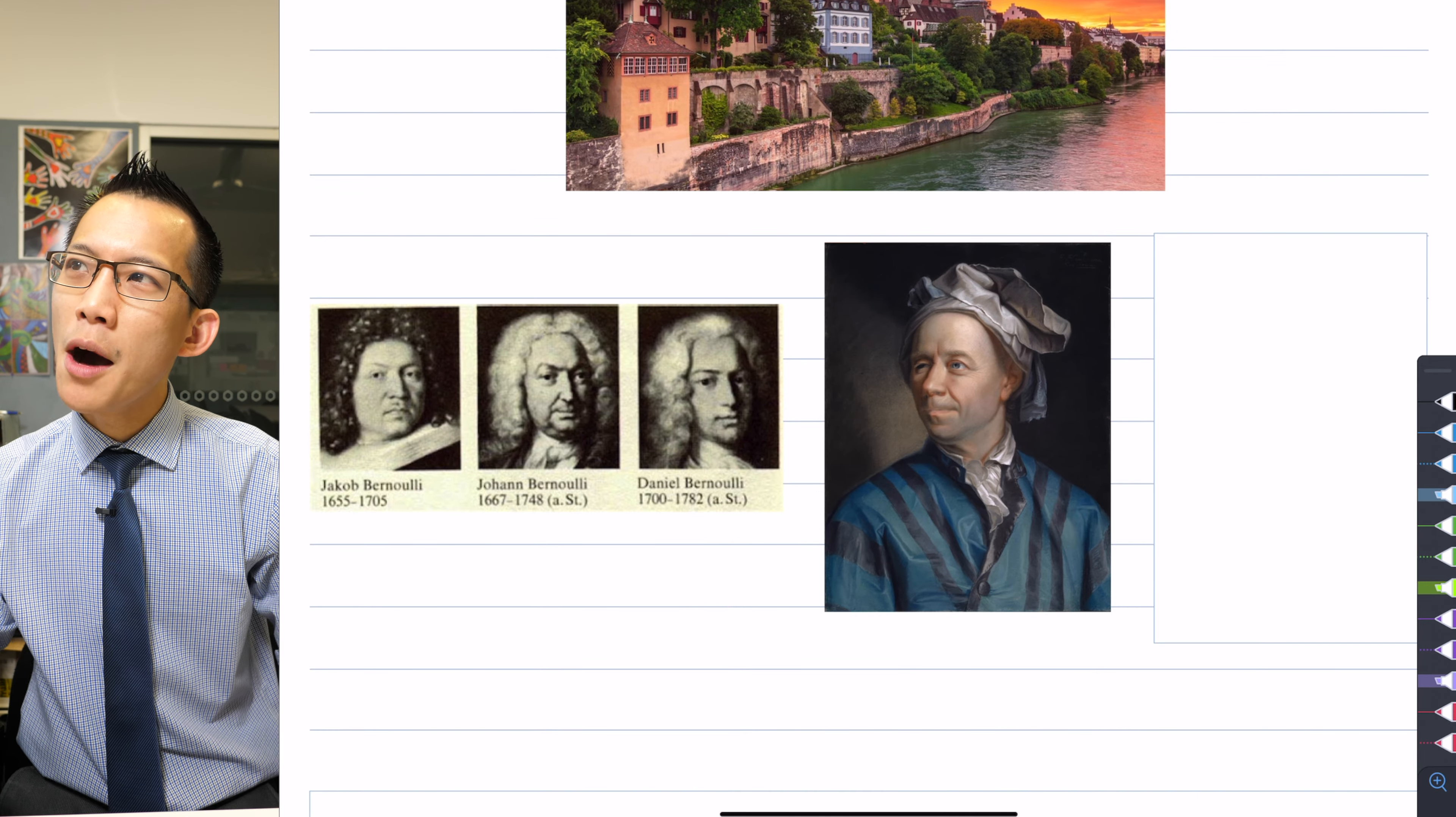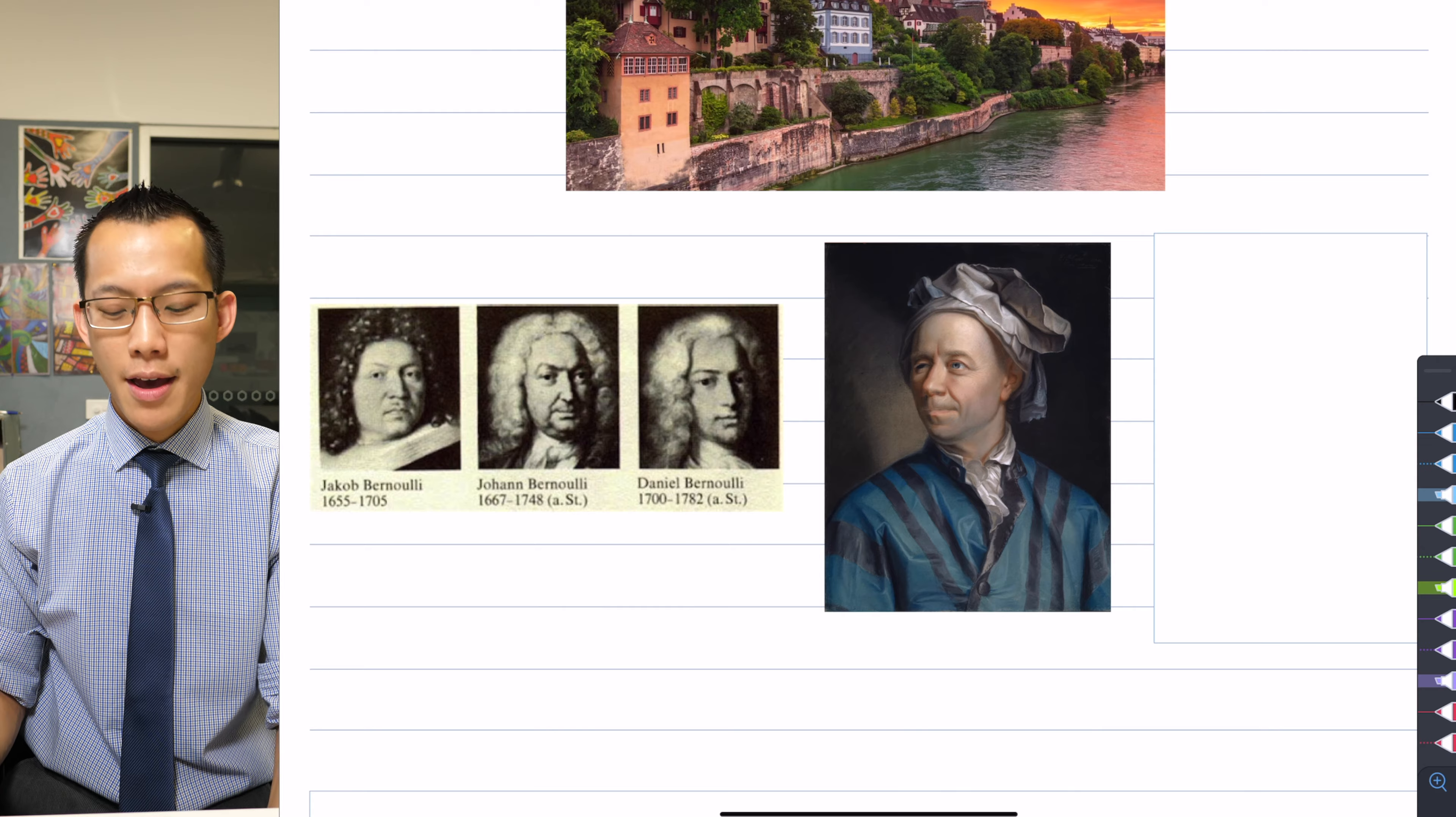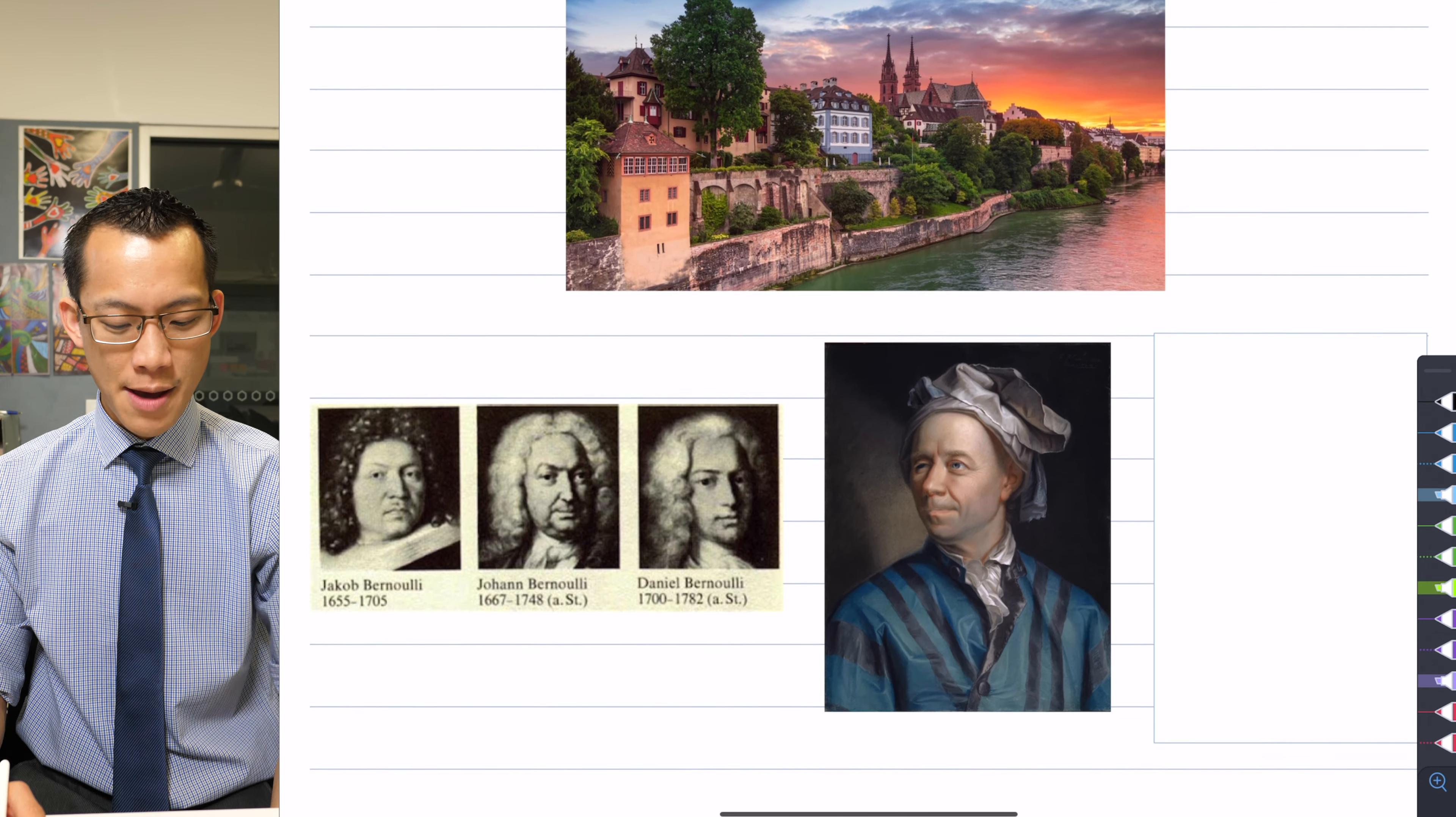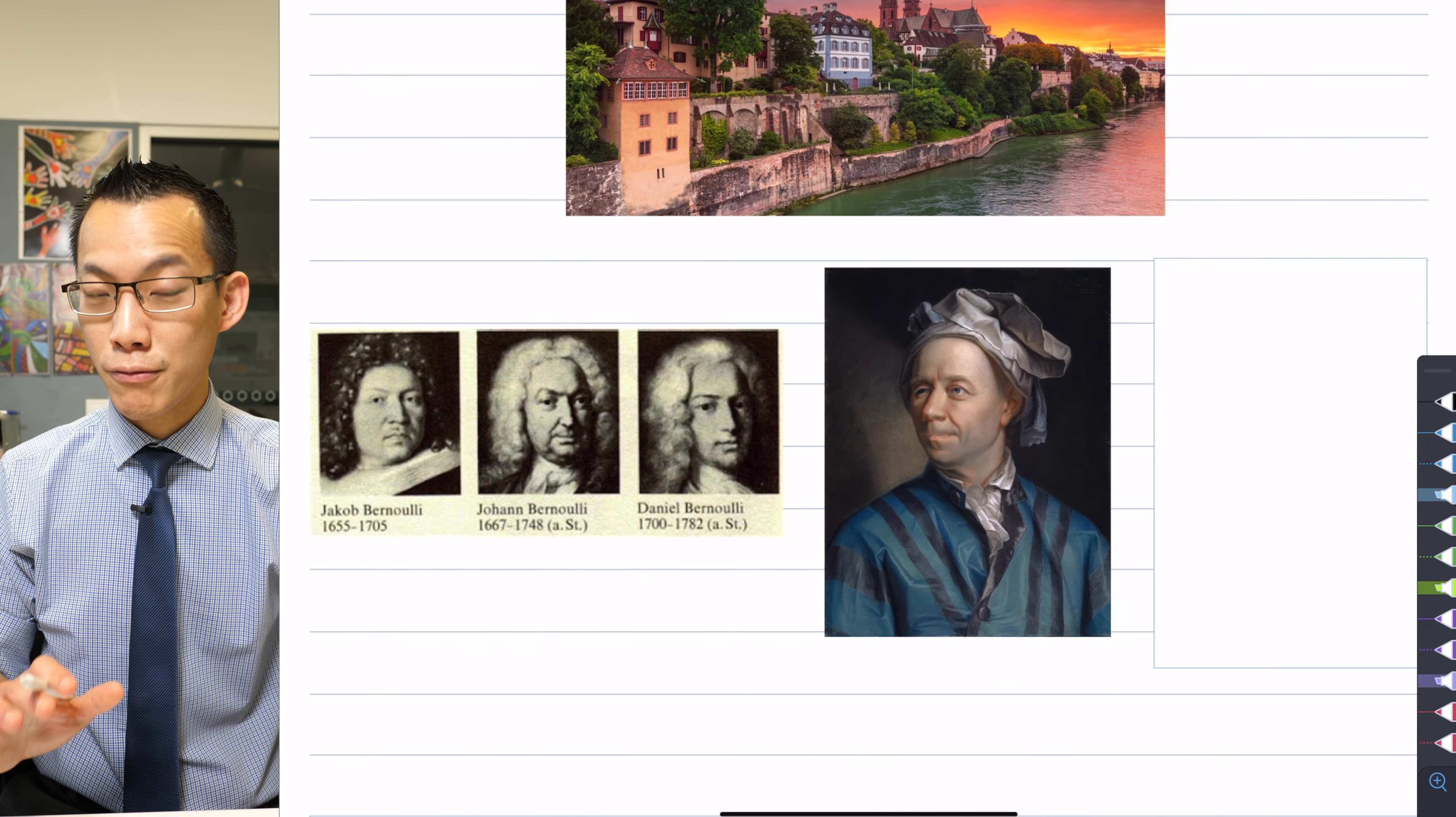And what was amazing about his solution was a couple of things. Number one, it was kind of a controversial solution. It used a bunch of techniques that weren't widely accepted at the time, but he stuck to his guns. He came up with a solution for this problem, a specific value, not an approximation, an exact value. And then a few years later, he came up with a solution that was a little more rigorous, you might say. And then other mathematicians sort of took that on board and said, okay, fine, we accept it, it's rigorous.